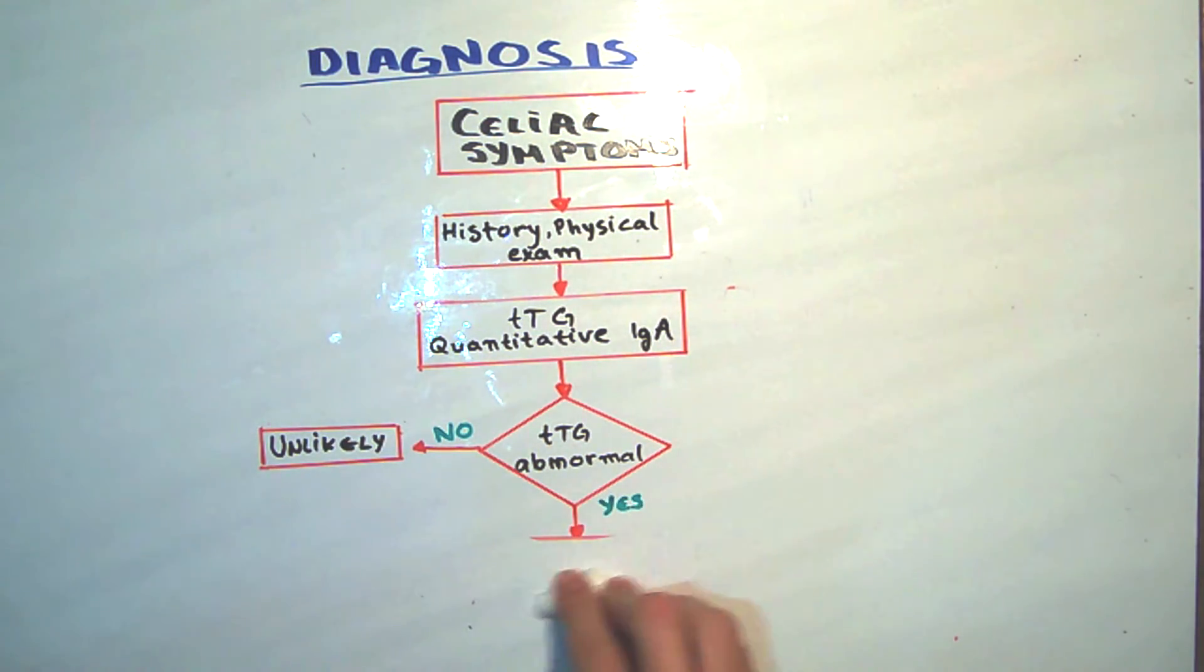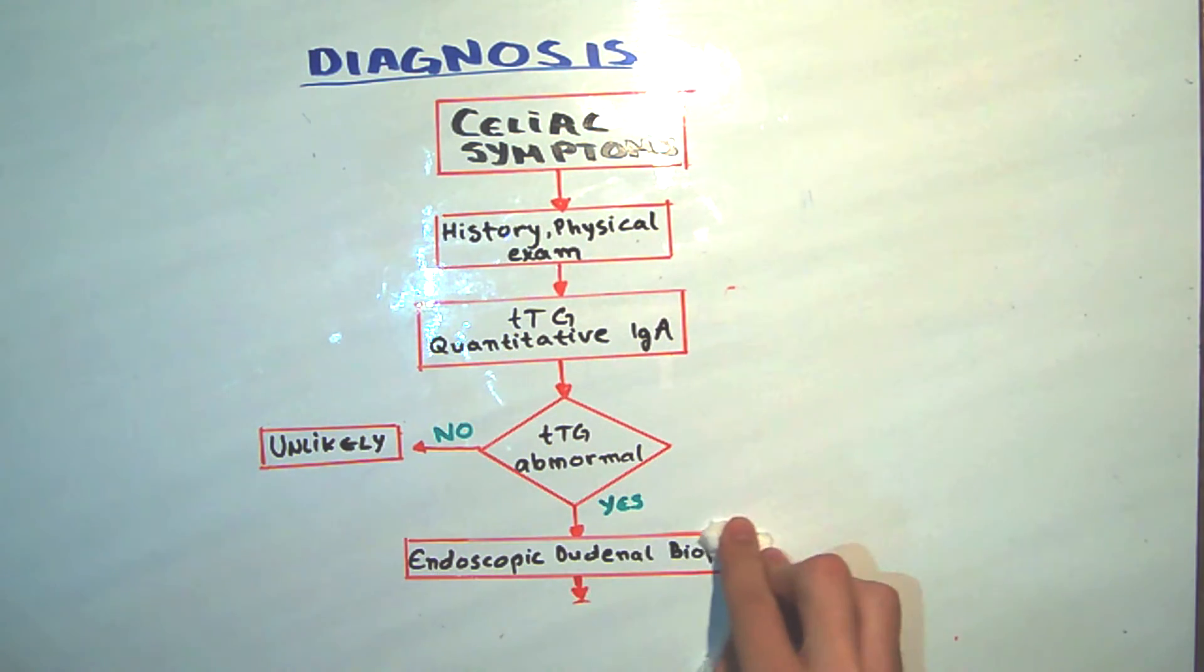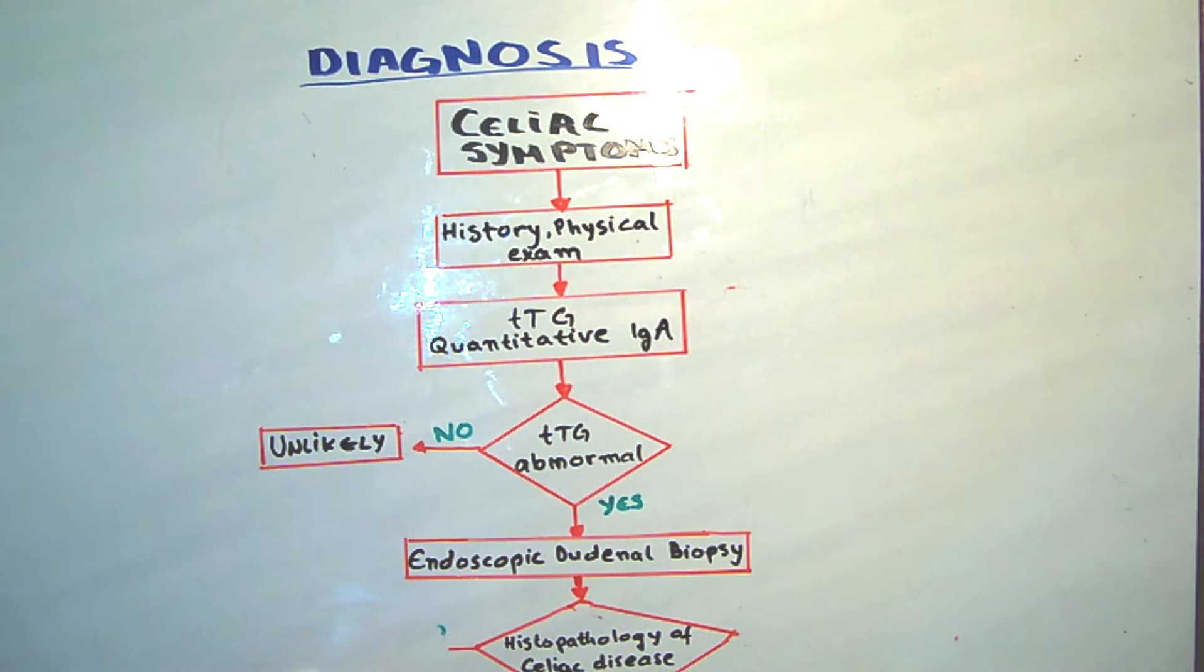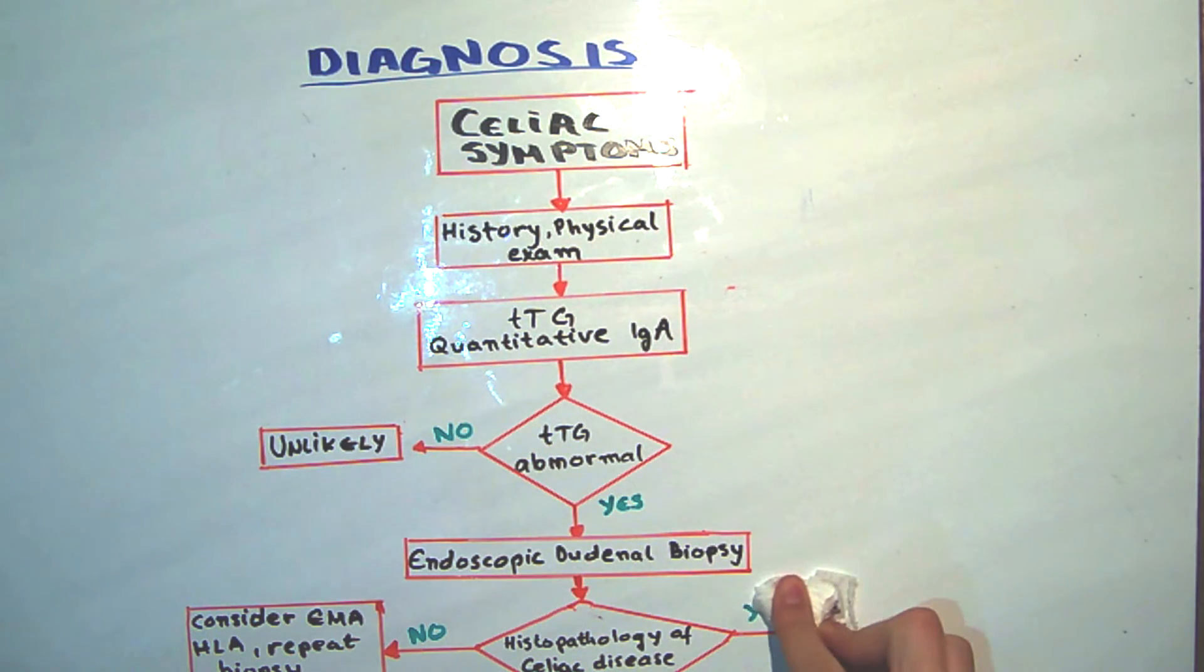Otherwise, we continue with endoscopic duodenal biopsy. If the biopsy is normal, we should consider other tests, such as endomysial antibodies, HLA or repeated biopsy. But if the histopathology of the biopsy is the same as that of the celiac disease, then we have our definite diagnosis, and we can start the treatment.